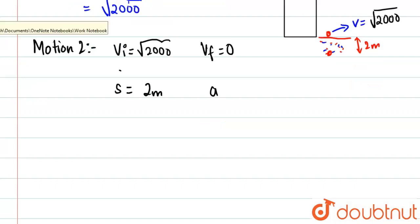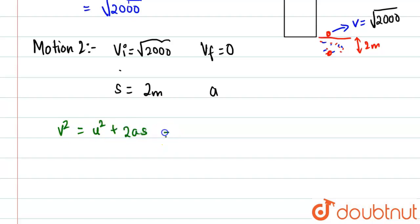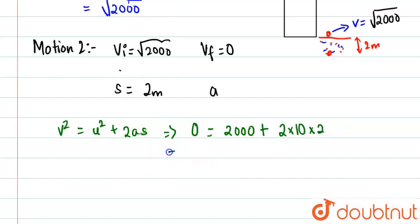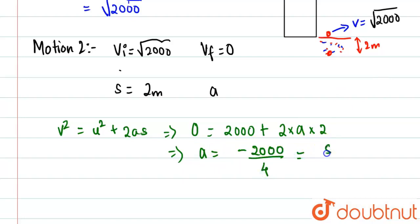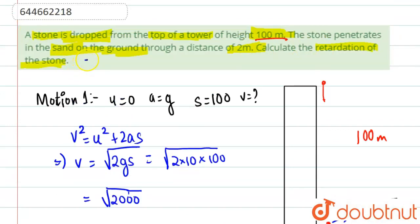We use the third equation of motion again: v² = u² + 2as. So 0 = 2000 + 2 × a × 2, which gives 2000 = −4a, so acceleration equals −2000 ÷ 4 = −500 m/s². The retardation is 500 m/s².